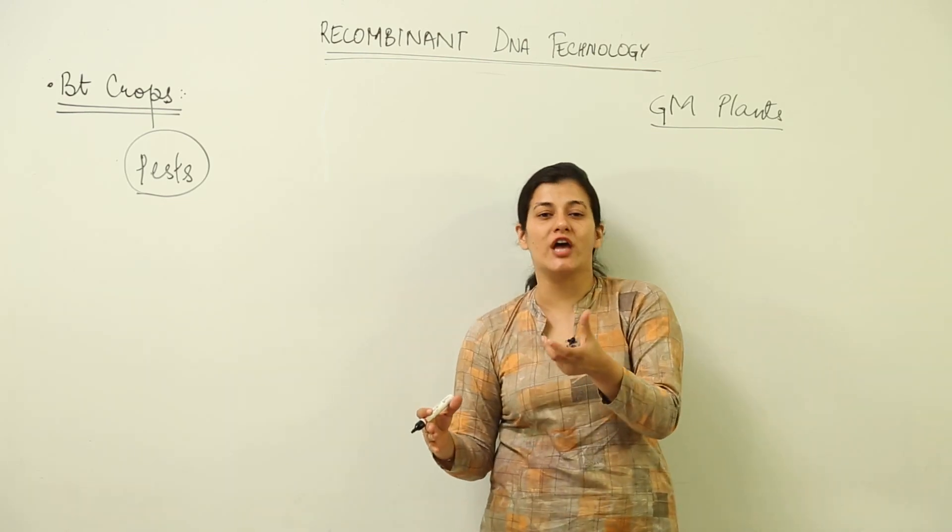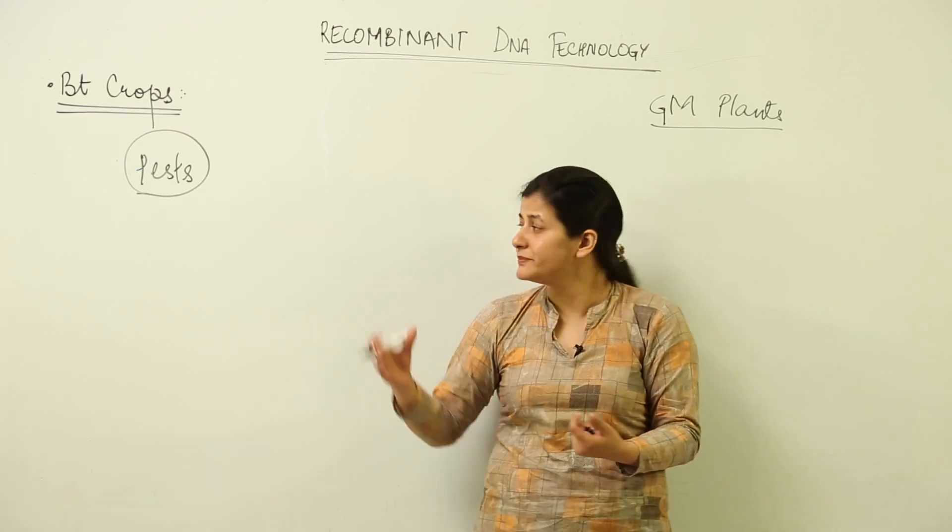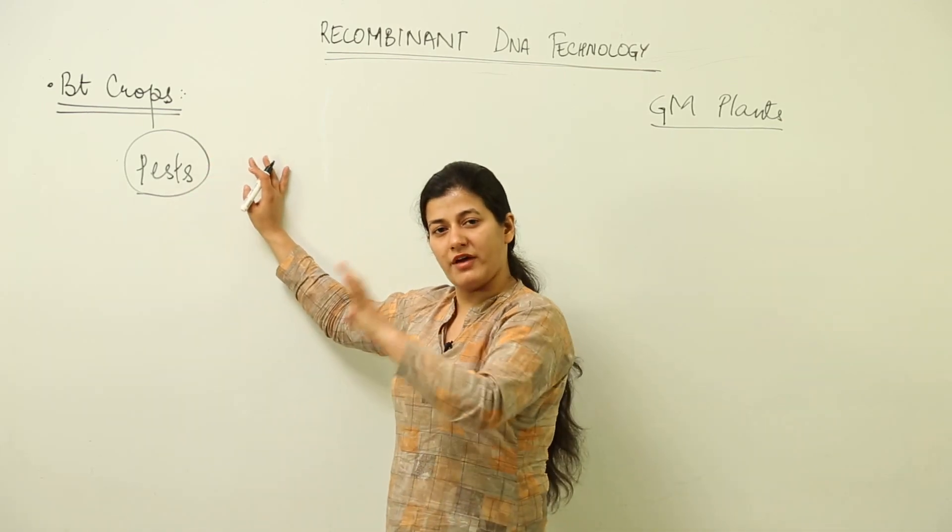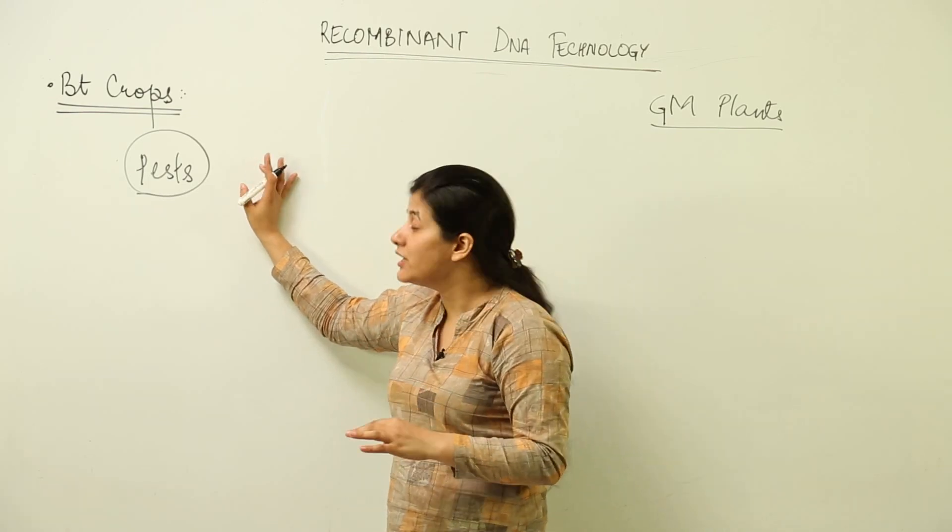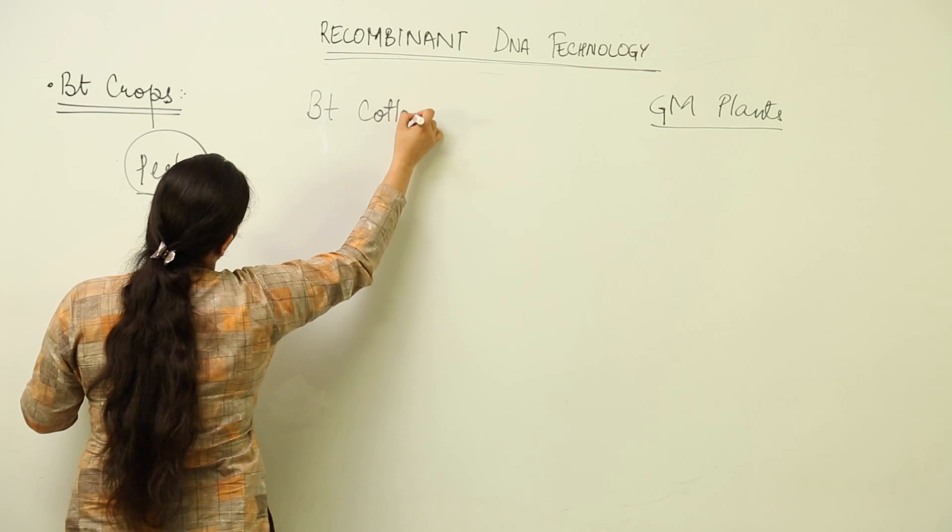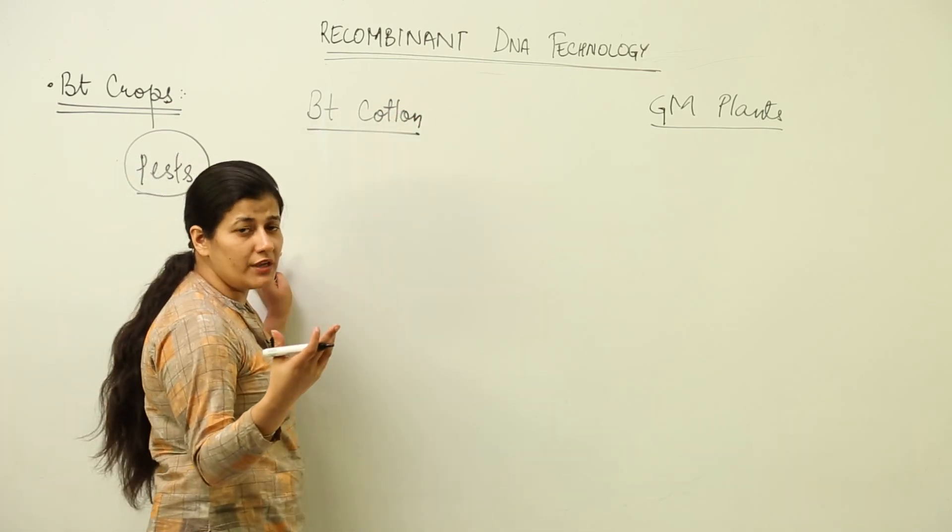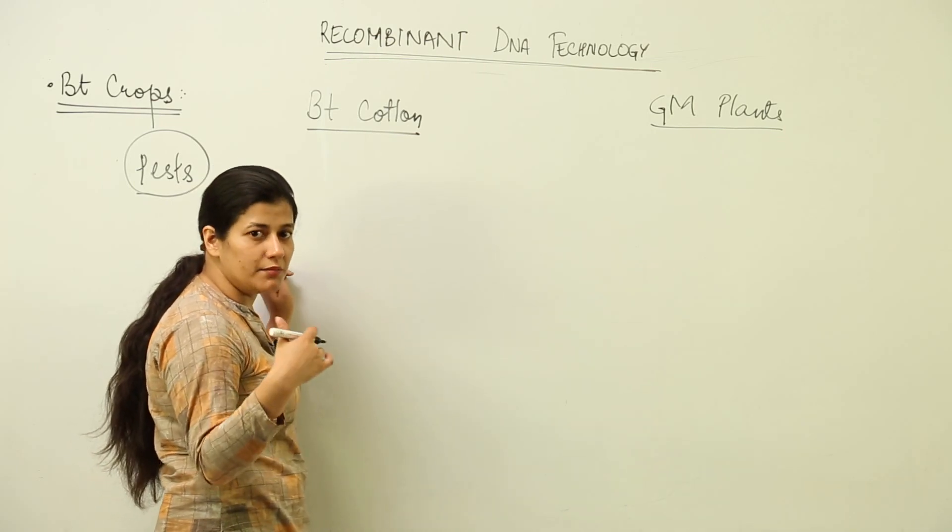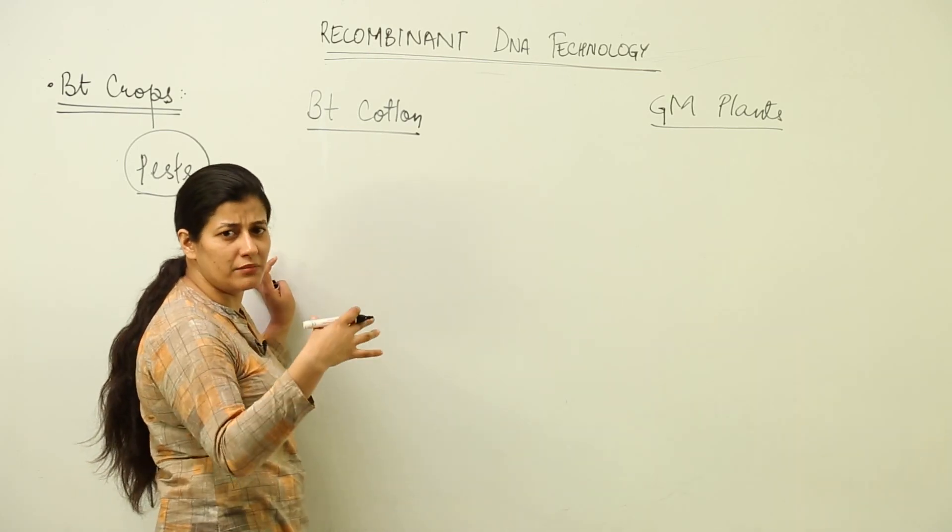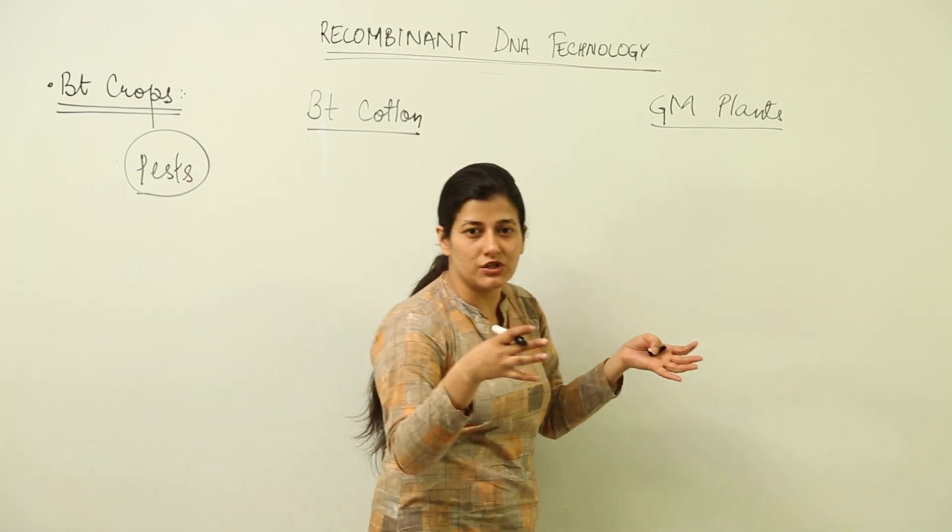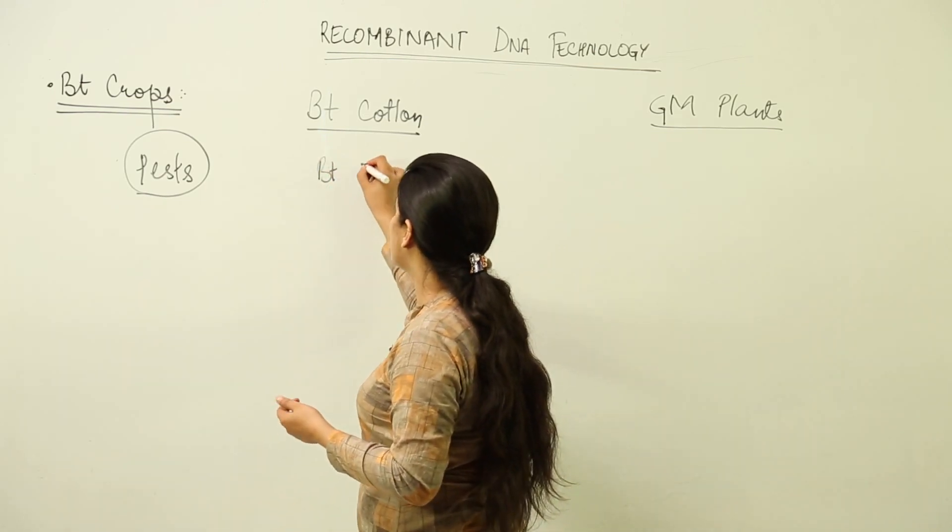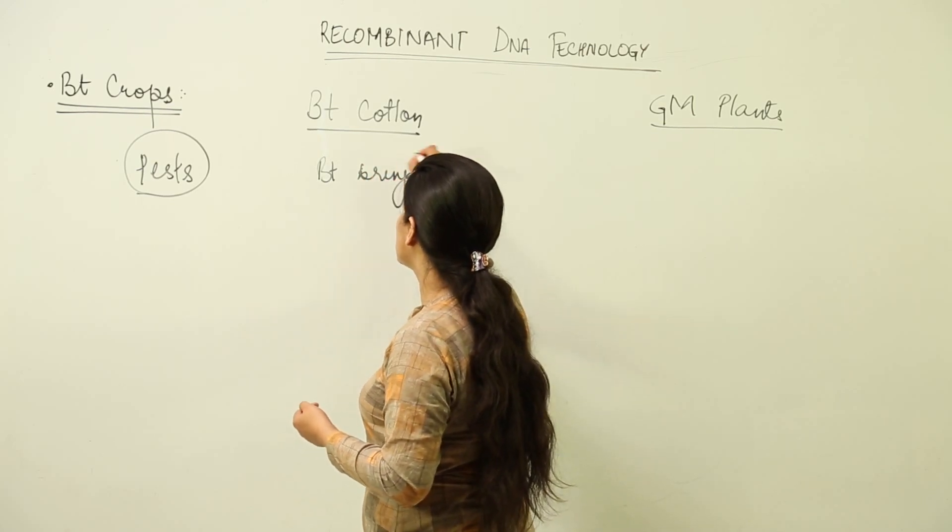For that, we have BT crops. Those crops which can themselves deal very well with the pest and kill them in return are BT crops. In our country, we have only BT cotton that has been legalized and can be put into the fields. The rest of the BT crops are still under field testing and paperwork is being done by the government so that all ethical issues are taken into consideration.